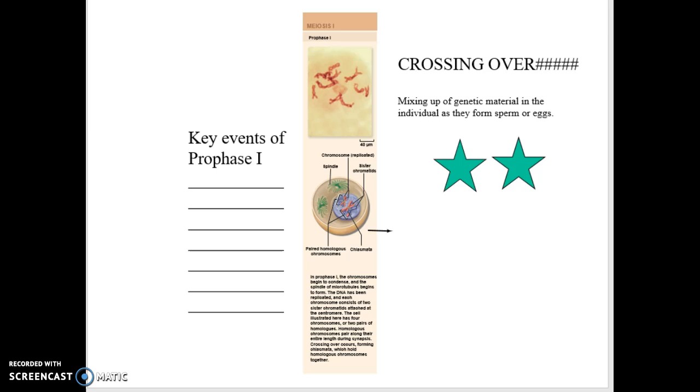If every egg is fertilized, she has 30,000 children. They are all genetically unique because of this step right here. This crossing over.